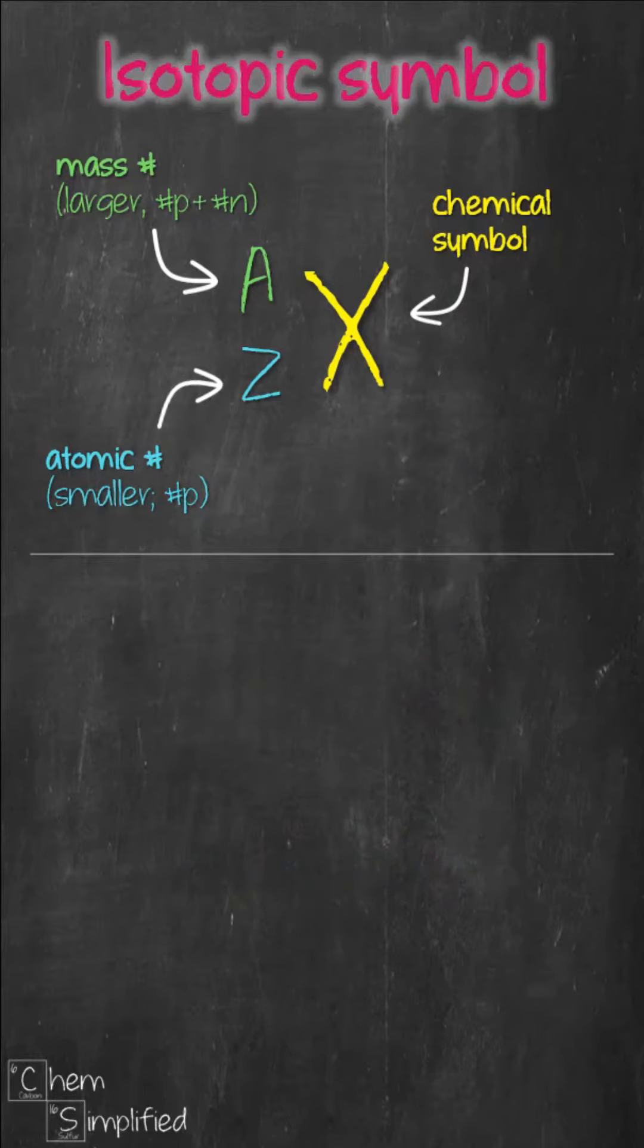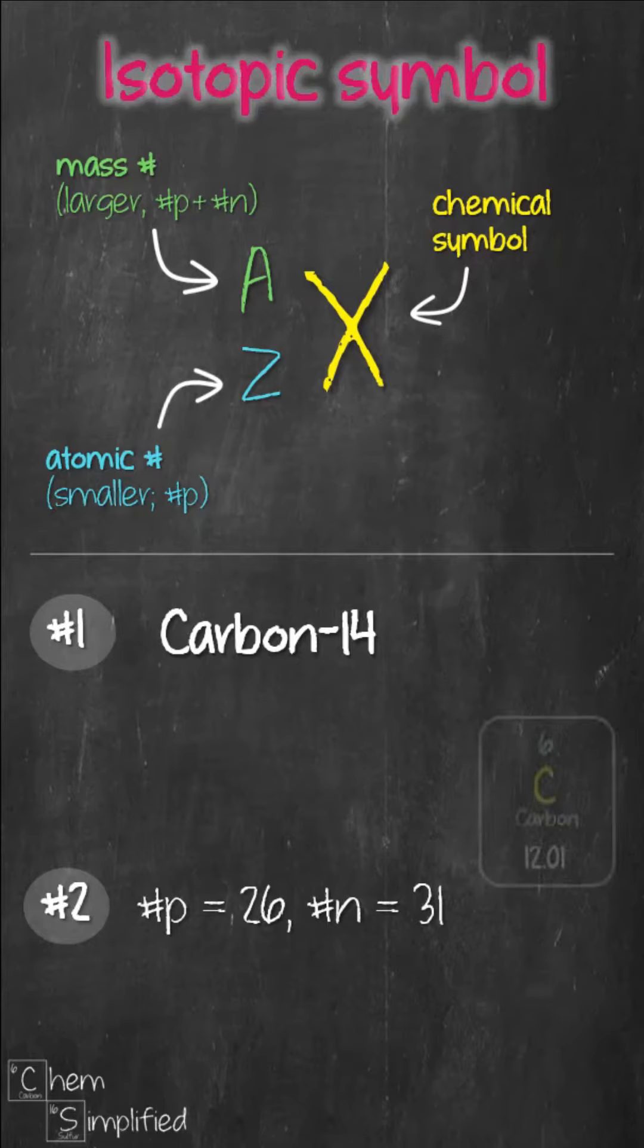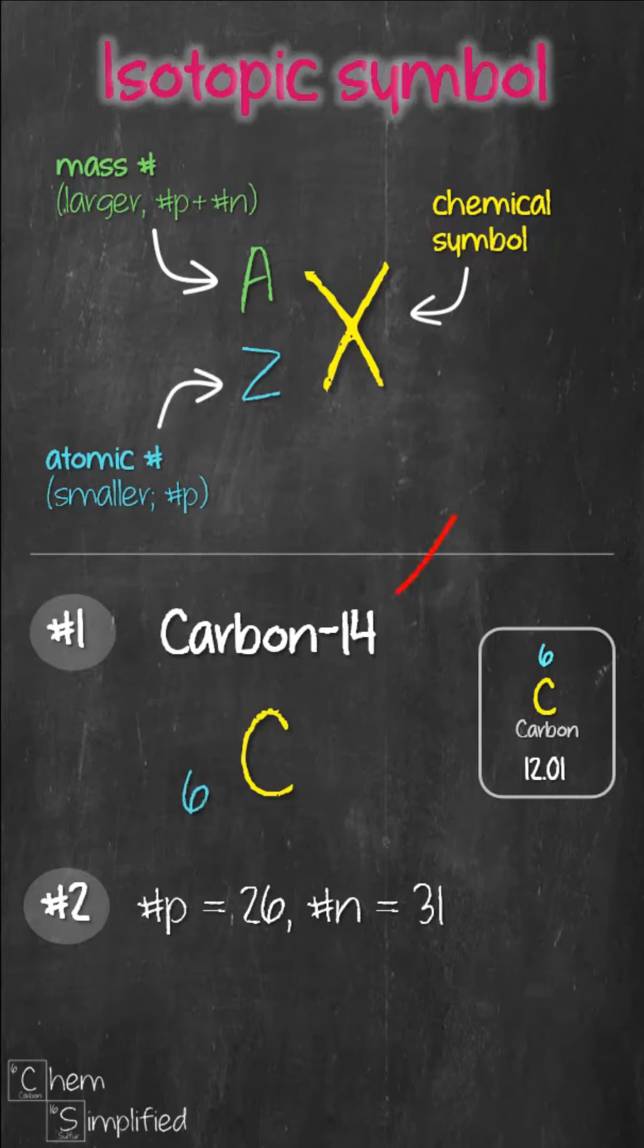Let's write the isotopic symbol for these two examples. From the periodic table, carbon has the symbol C and atomic number 6. The mass number is already given by the question which is 14. This is the isotopic symbol for carbon 14.